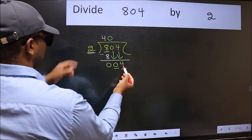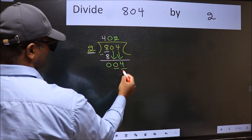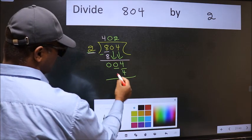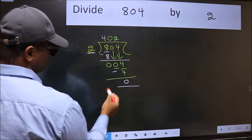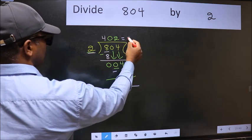When do we get 4 in 2 table? 2 2s 4. Now we should subtract. We get 0. So this is our quotient.